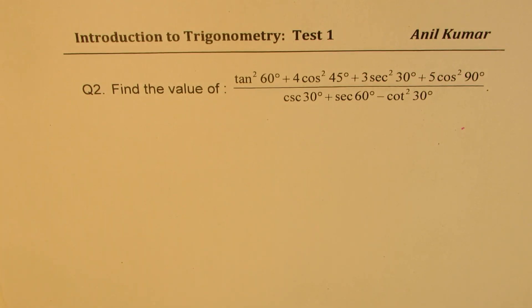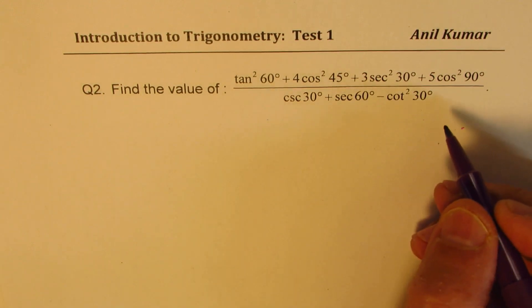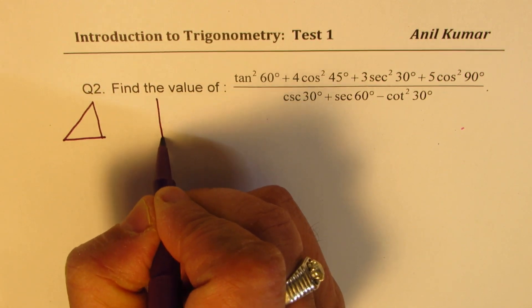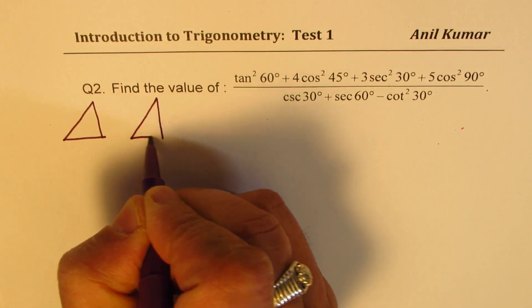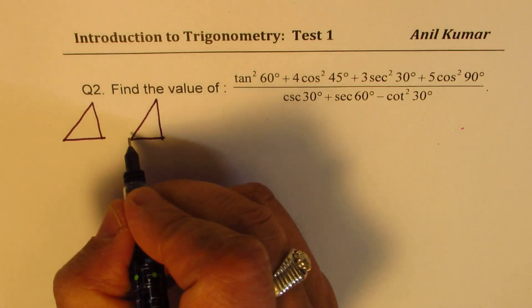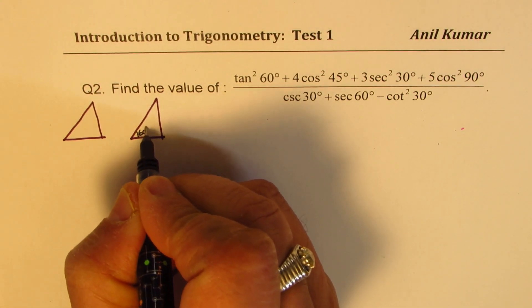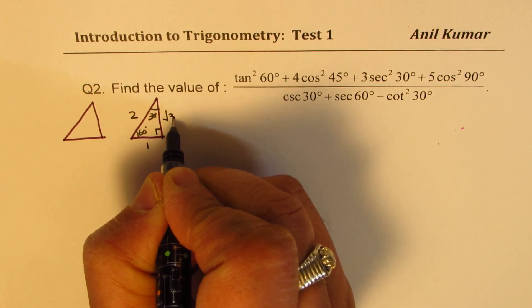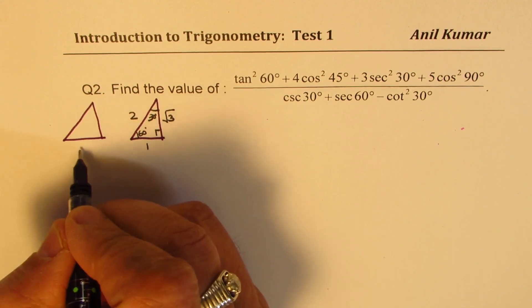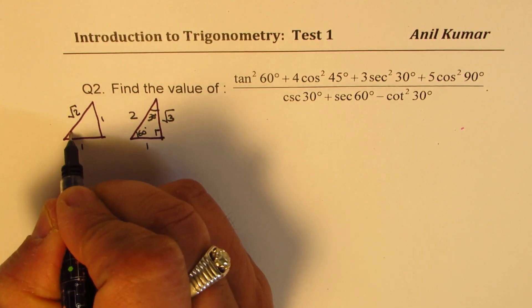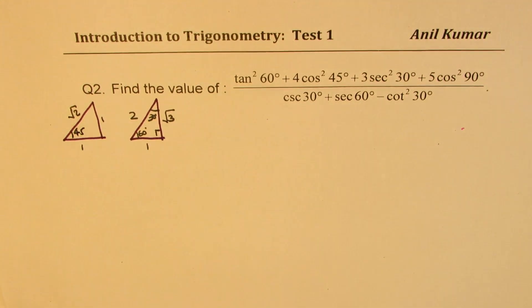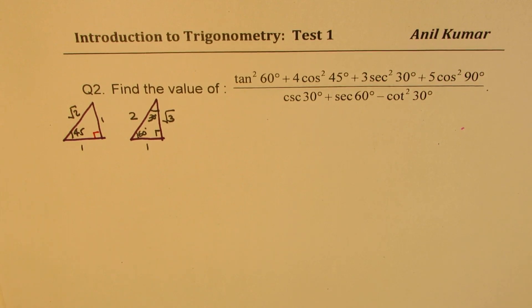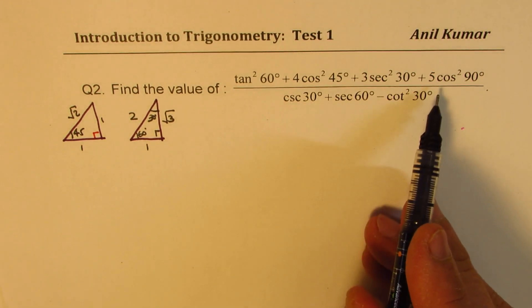Let's move on and take the second question now. To find this value, we have to use two triangles: the special triangle where the angle is 45 degrees, and the other where it is 30-60-90. The sides are 1, 2, square root 3 for the 30-60-90 triangle, and 1, 1, square root 2 for the 45-degree triangle. We'll substitute the values one by one.